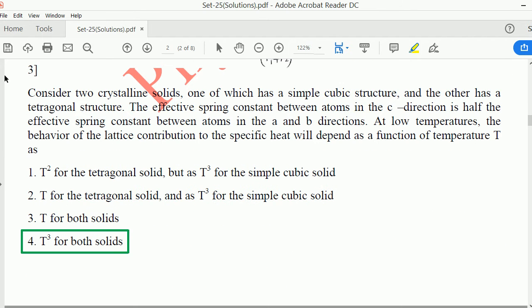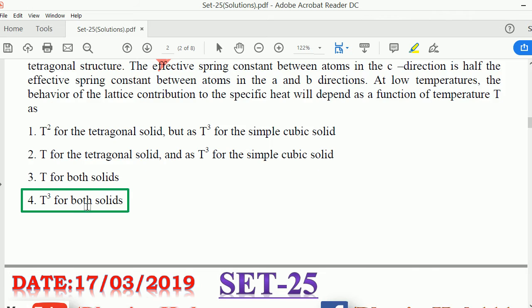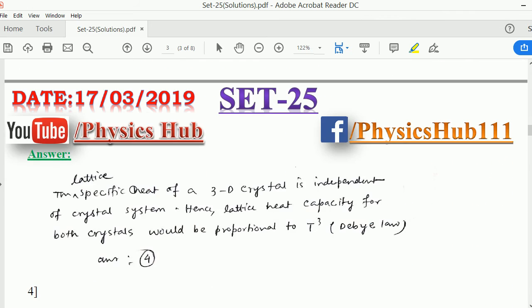Now question number 3. Consider two crystalline solids: one which has a simple cubic structure and the other has a tetragonal structure. The effective spring constant between atoms in the C direction is half the effective spring constant between atoms in the A and B directions. At low temperatures, the behavior of the lattice contribution to the specific heat will depend as a function of temperature T as: